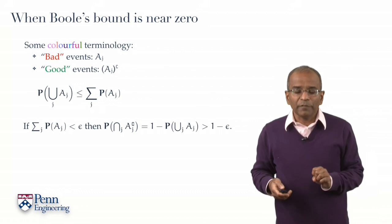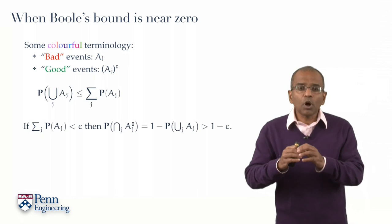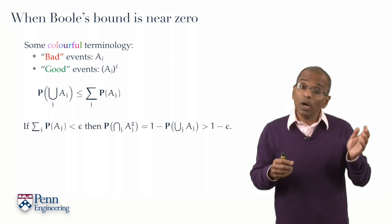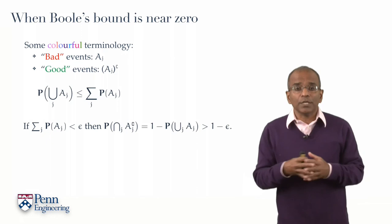All told, this is a potent observation. Again, if the sum is small, then the probability that no bad event occurs is quite large, is near one.